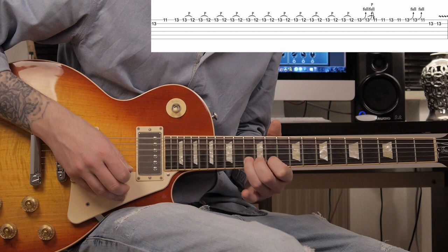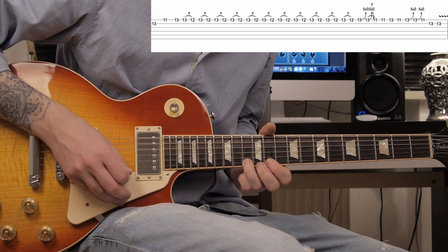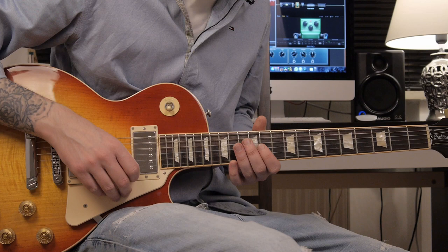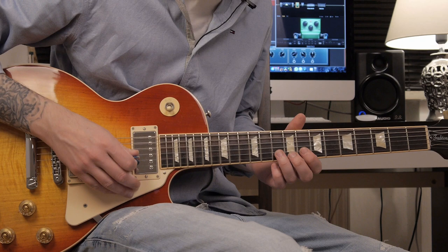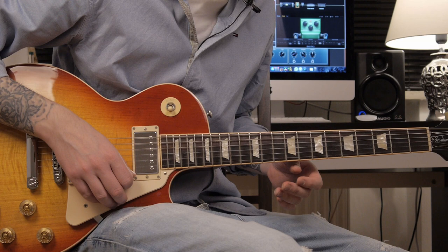So that's the whole lick. That's the second Freddie King signature lick. You can play that lick in any key. Now we are in the key of C. You could play that in the key of A, or in the key of G.